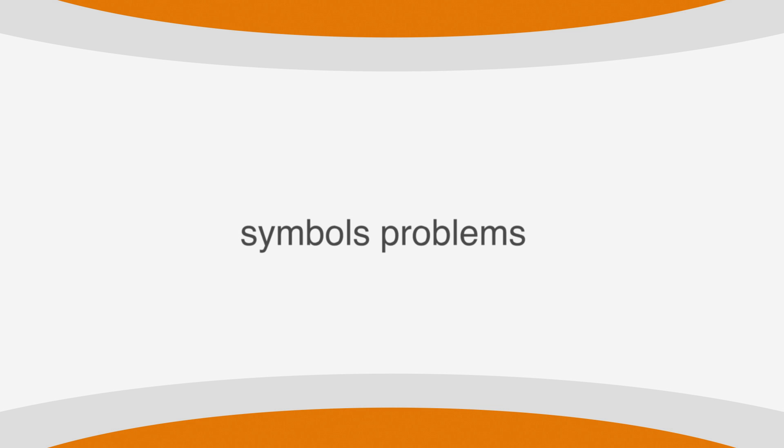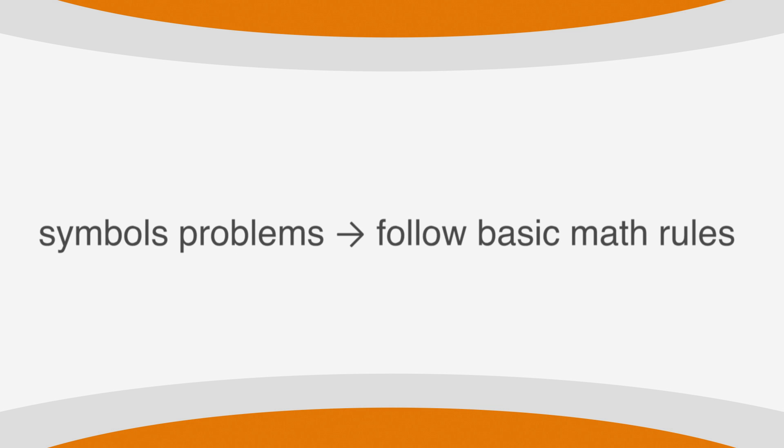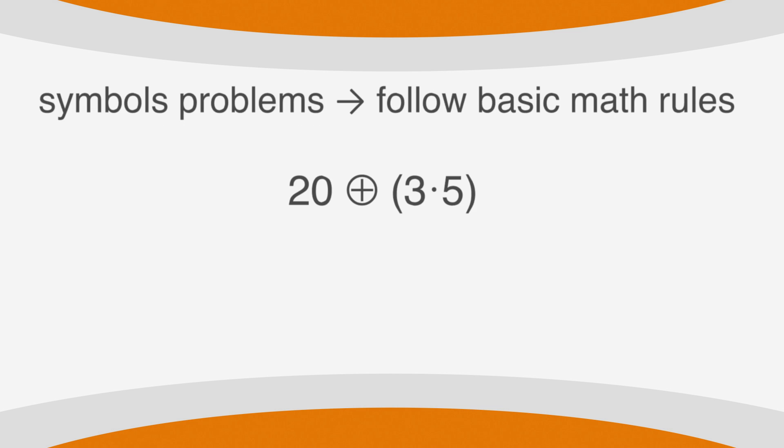For example, if you have a symbols problem with parentheses, you would work out what's in the parentheses first just as you always would. So 20 circle-cross (3 times 5) becomes 20 circle-cross 15. Remember that circle-cross isn't a math symbol — it means whatever the SAT tells you it means.